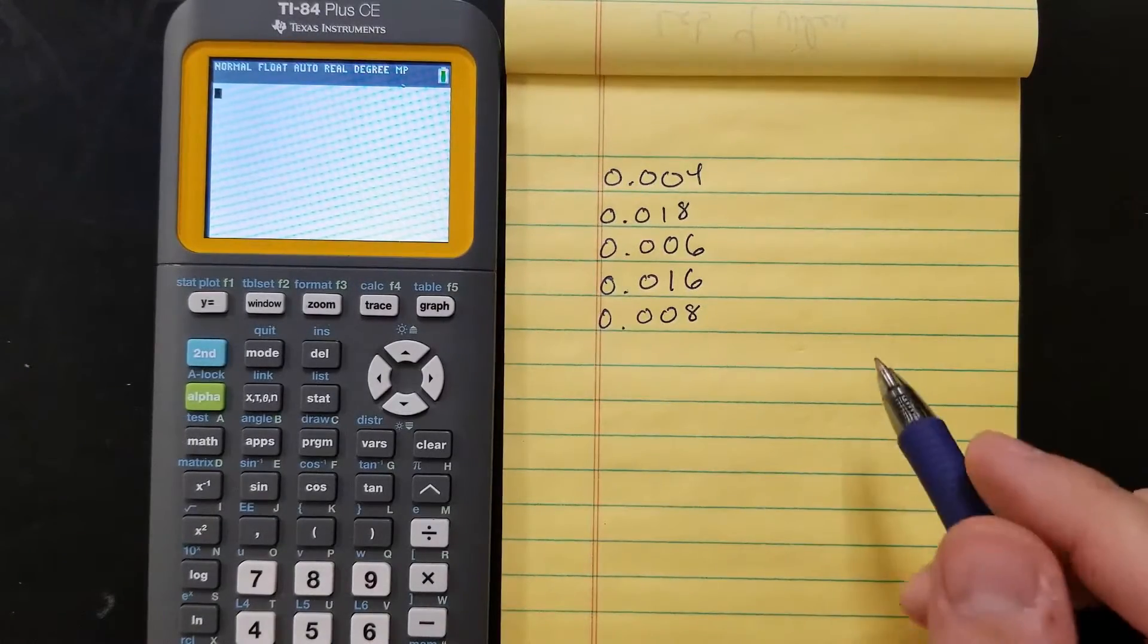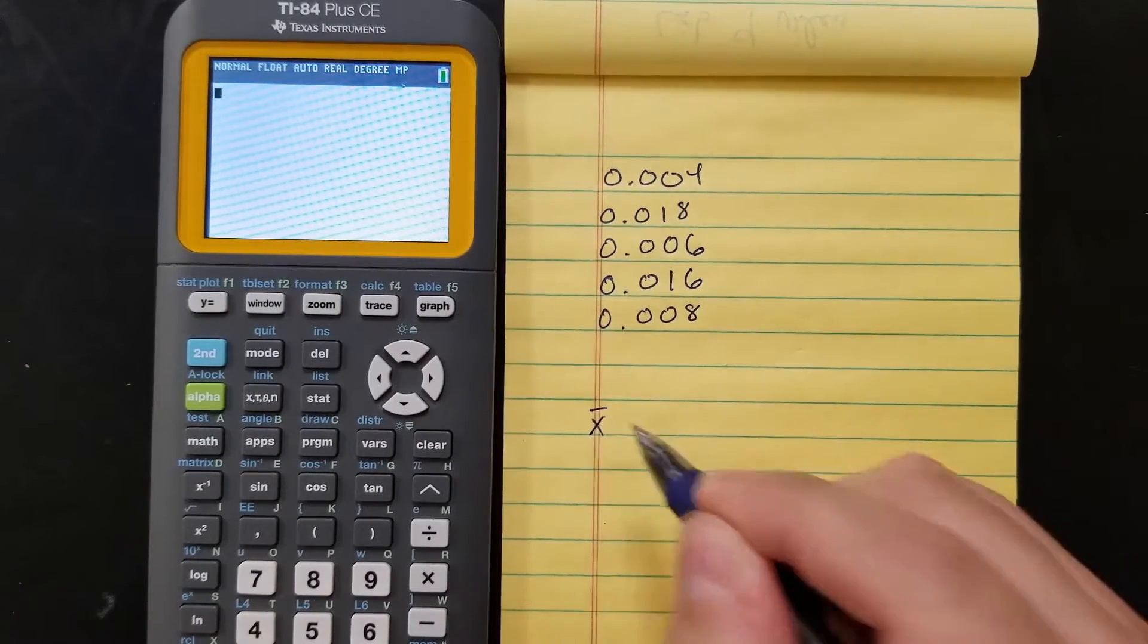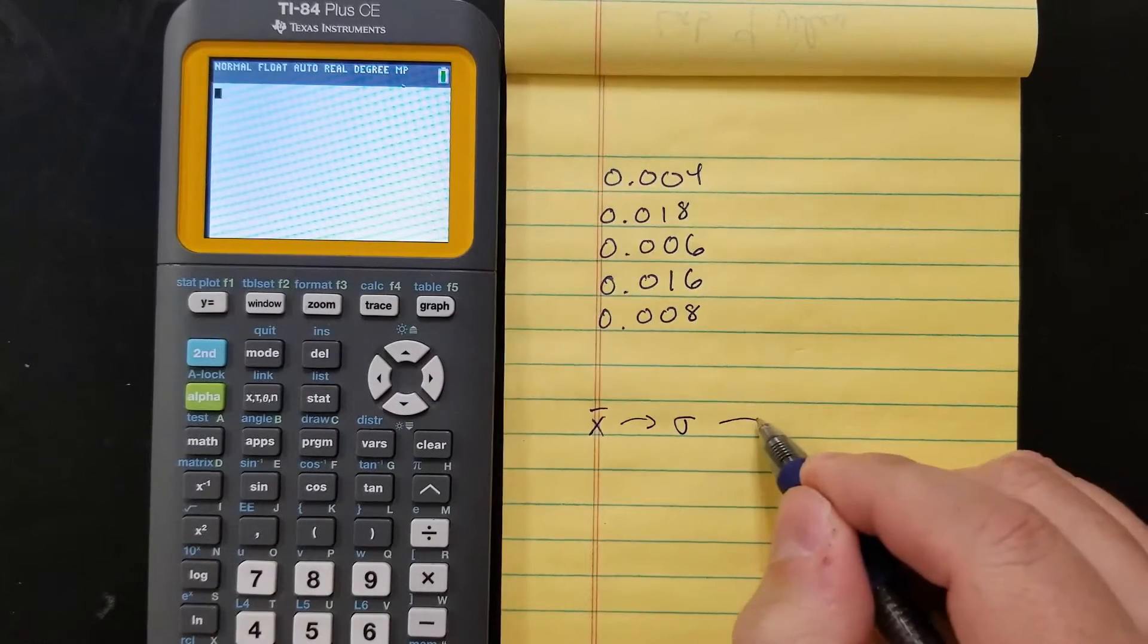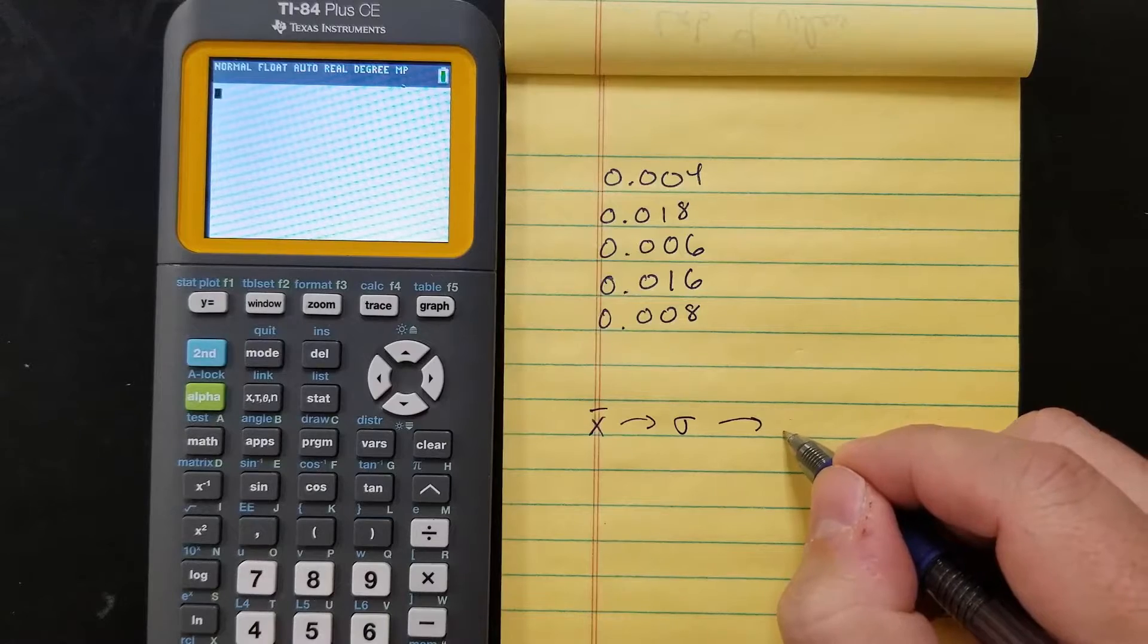If you remember confidence intervals, to get that, first you have to find the average. Then you have to use the average to find the standard deviation. Then you have to use the standard deviation to find the standard uncertainty.